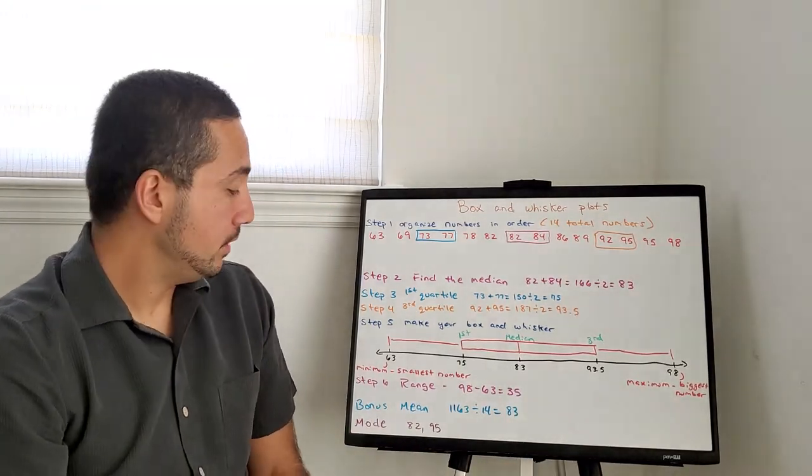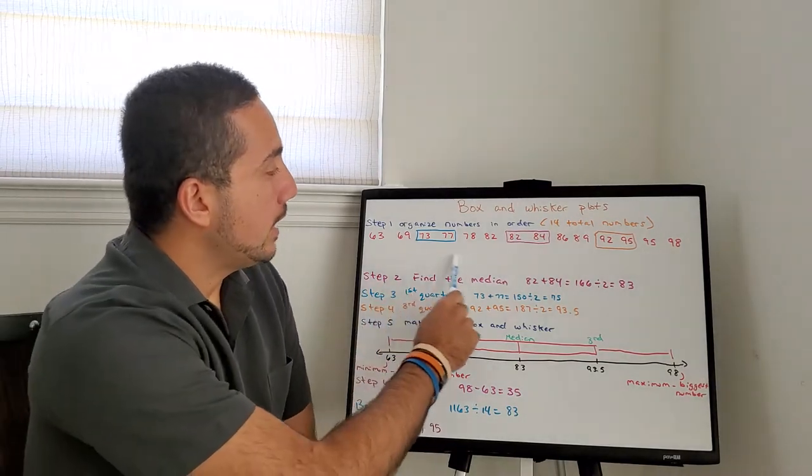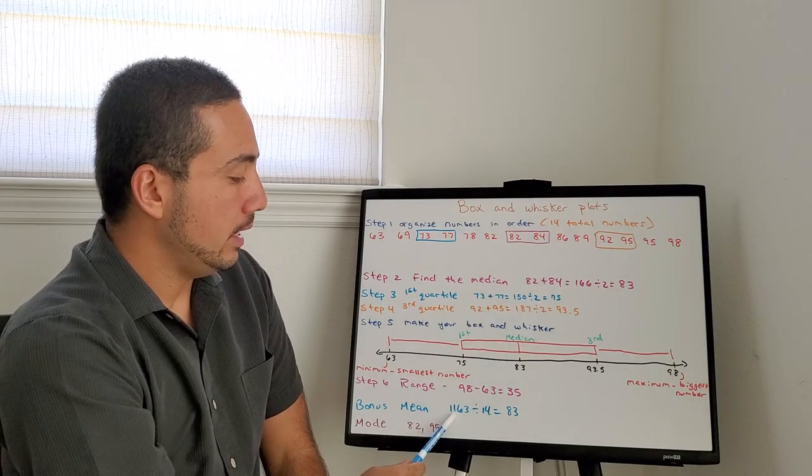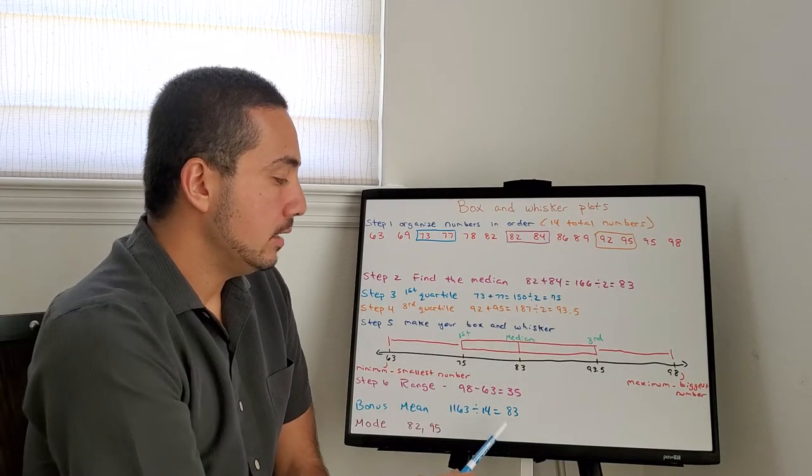And the little bonus for you today, the mean. You add all these numbers up. There's 14 numbers. So, 1163 divided by 14 equals 83.